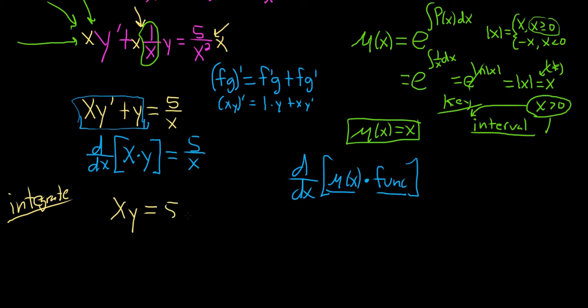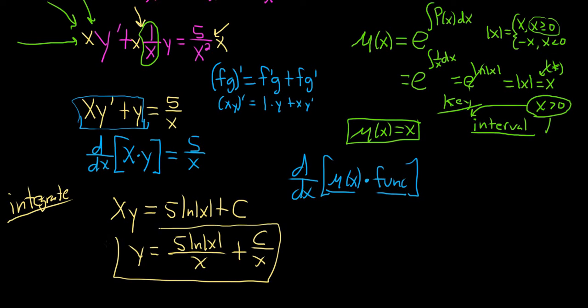you just get natural log of x. If you integrate 5 over x, you get 5 ln x with an absolute value. And let's not forget the c. The last thing to do would be to divide by x. So y is equal to 5 ln absolute value of x over x plus c over x. So this would be the solution to the differential equation.